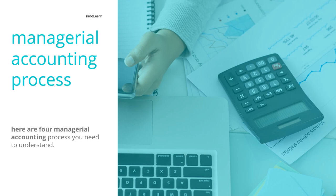A cost is a financial sacrifice a company makes to purchase or produce something. Managers accept this with the expectation that costs provide some kind of benefit, such as sales and net income. Costs can also be divided into product and period categories. Number one: product costs — the costs of making products, usually inside the factory.